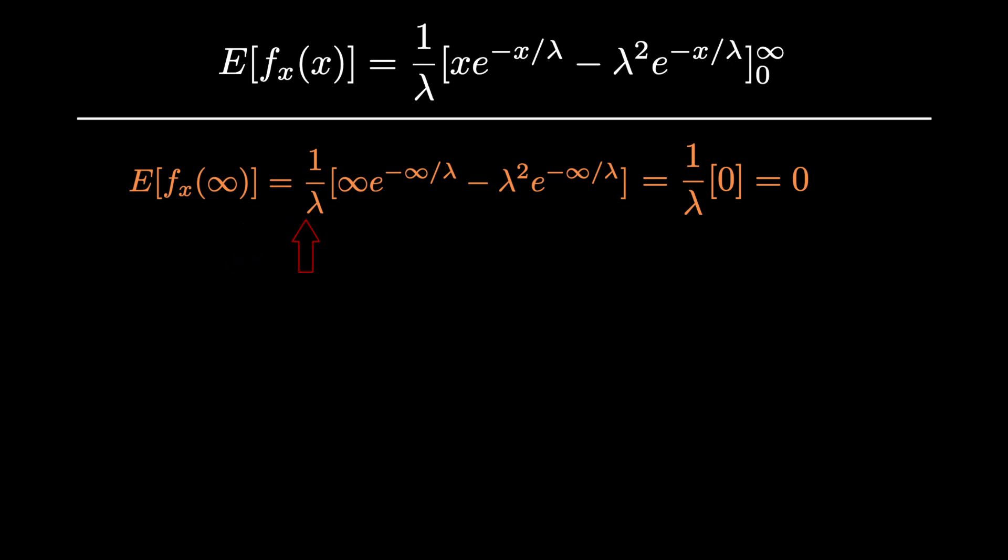What's important to note here is that we're making the assumption that infinity divided by e to the infinity over lambda is going to equal 0 as we go to infinity.